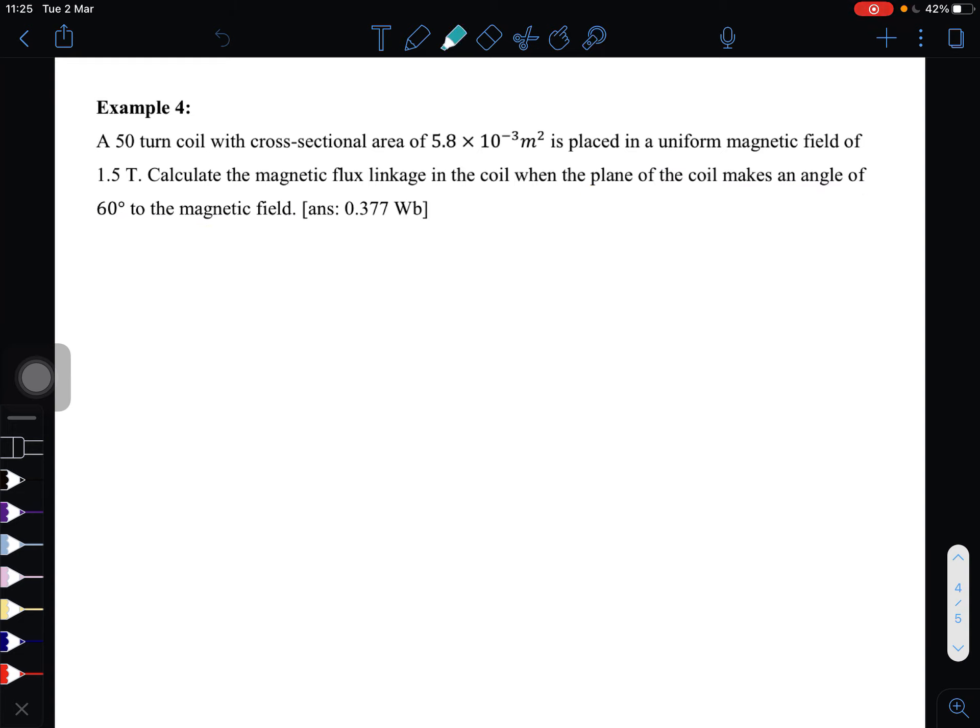So we have 50 turns of coil in an area here, and then magnetic field 1.5. Now we want to find magnetic flux linkage, which is number of turns times the magnetic flux. This is what we want to find.